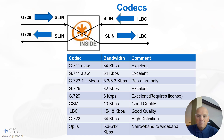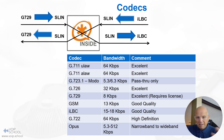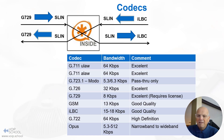G.711 ulaw and alaw are also very popular — alaw is particularly popular in Brazil. Codecs like G.723, G.726, GSM, and iLBC are in my opinion obsolete. G.723 has a lot of compression but really bad quality, and Opus can achieve the same compression with better quality. Even G.729, which is excellent, required licenses — though the patent has expired, there's really no reason to use it anymore.